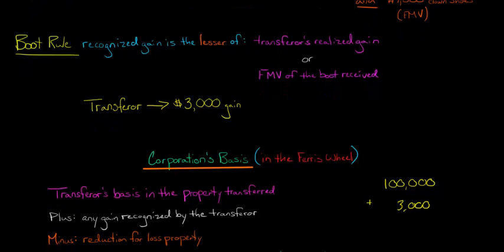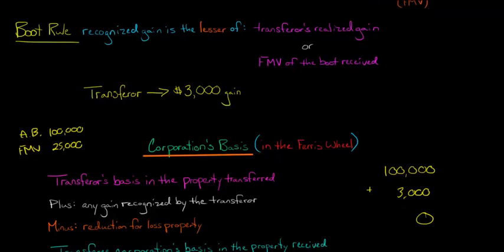We also subtract any reductions for lost property. Lost property doesn't apply here with the Ferris wheel, but let's say the adjusted basis had been $100,000 and the fair market value was $25,000. In such a case, the fair market value is lower than the adjusted basis, so we call that lost property - a built-in loss. I'm going to make an entire video dealing with this exception because it's quite complicated. But it doesn't apply in this example, so it's zero.